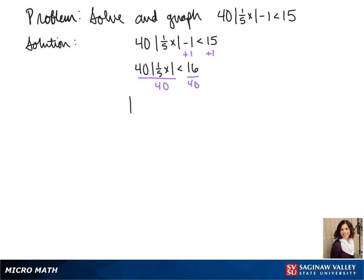We get the absolute value of 1 fifth x is less than, this simplifies to 2 fifths, when we divide both the top and bottom by 8.